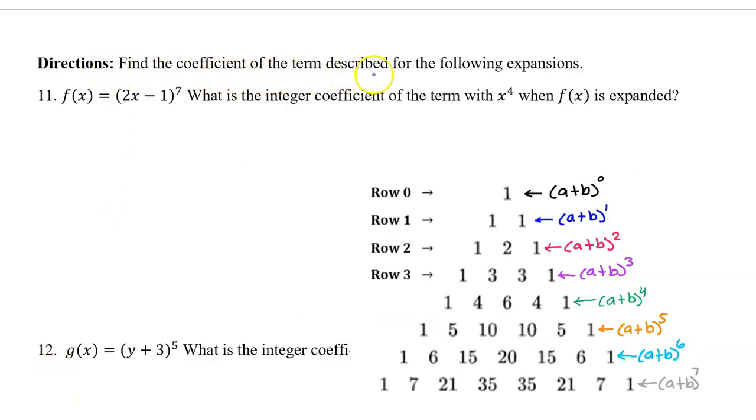Find the coefficient of the term described for the following expansions. Number 11: f(x) = (2x - 1)^7. What is the integer coefficient of the term with x^4 when f(x) is expanded?